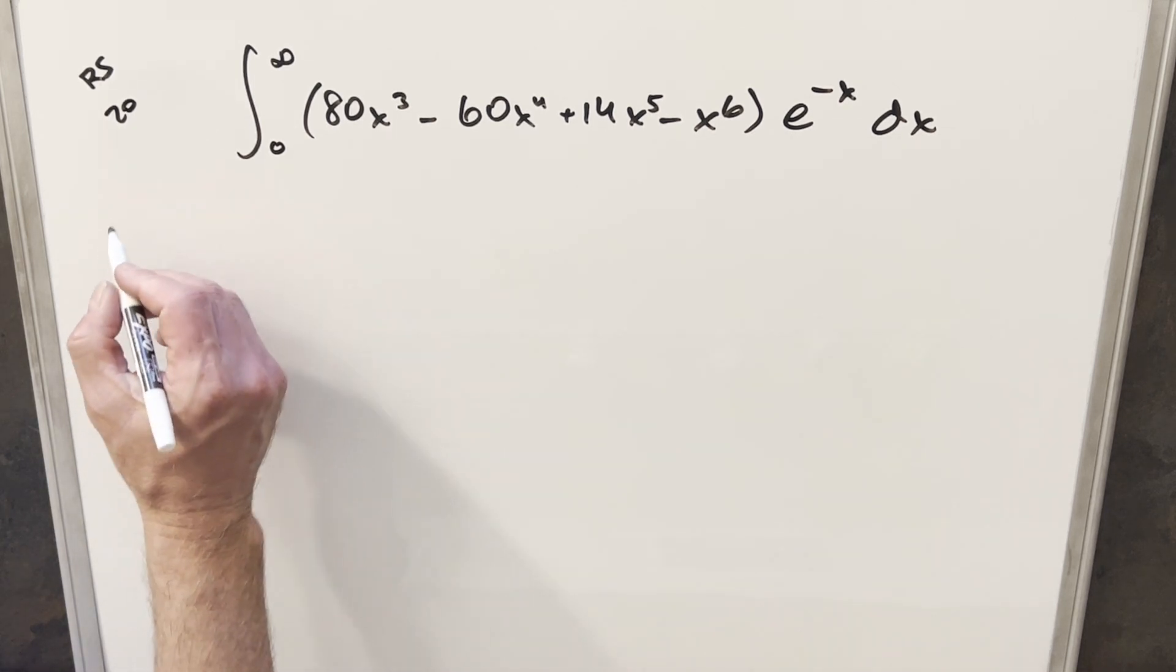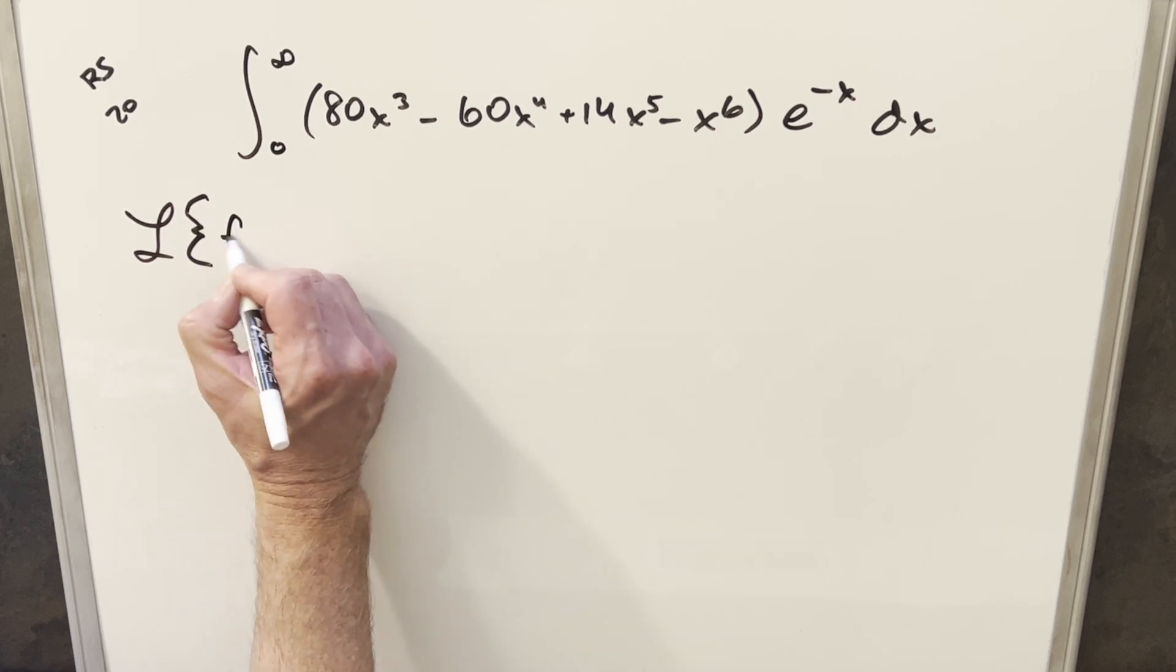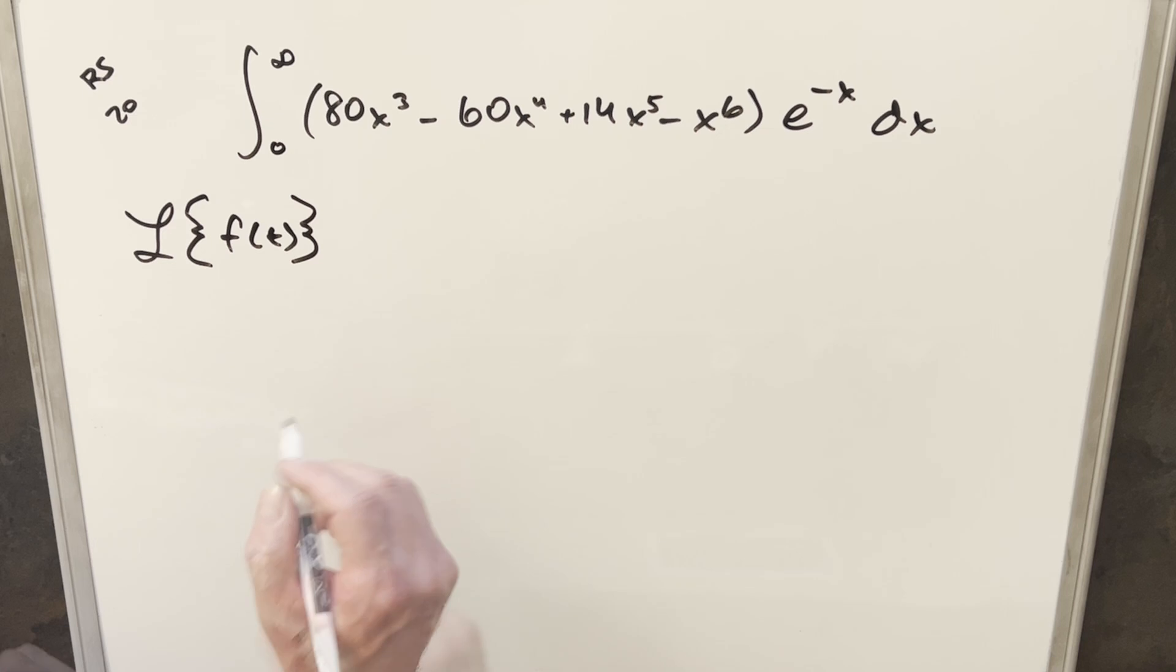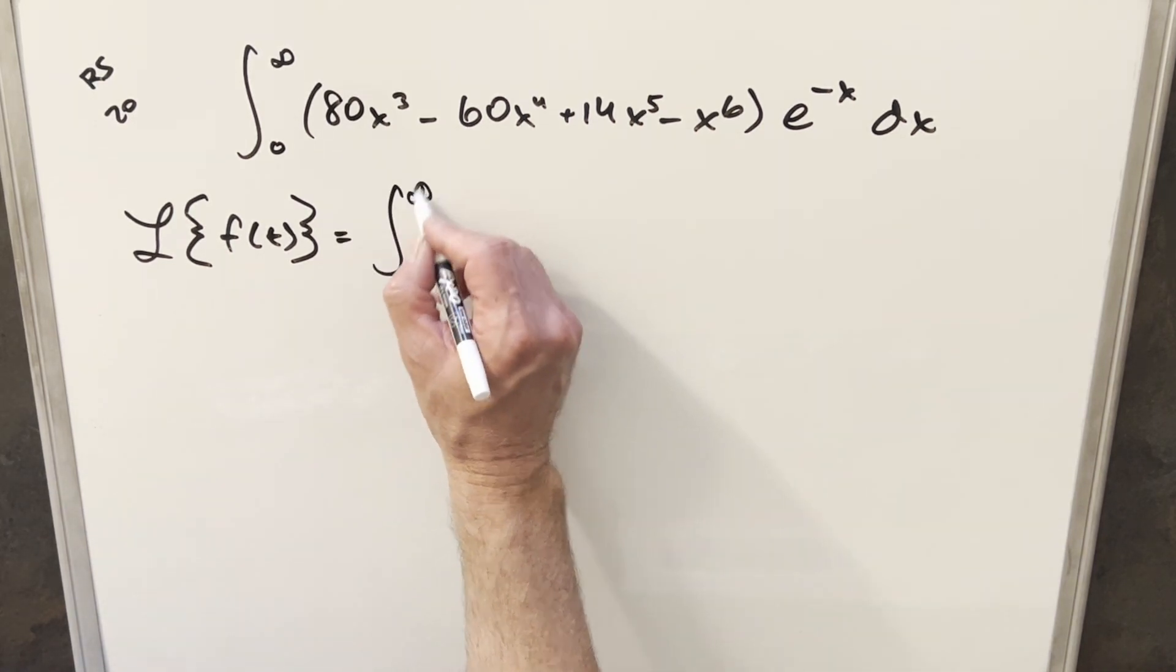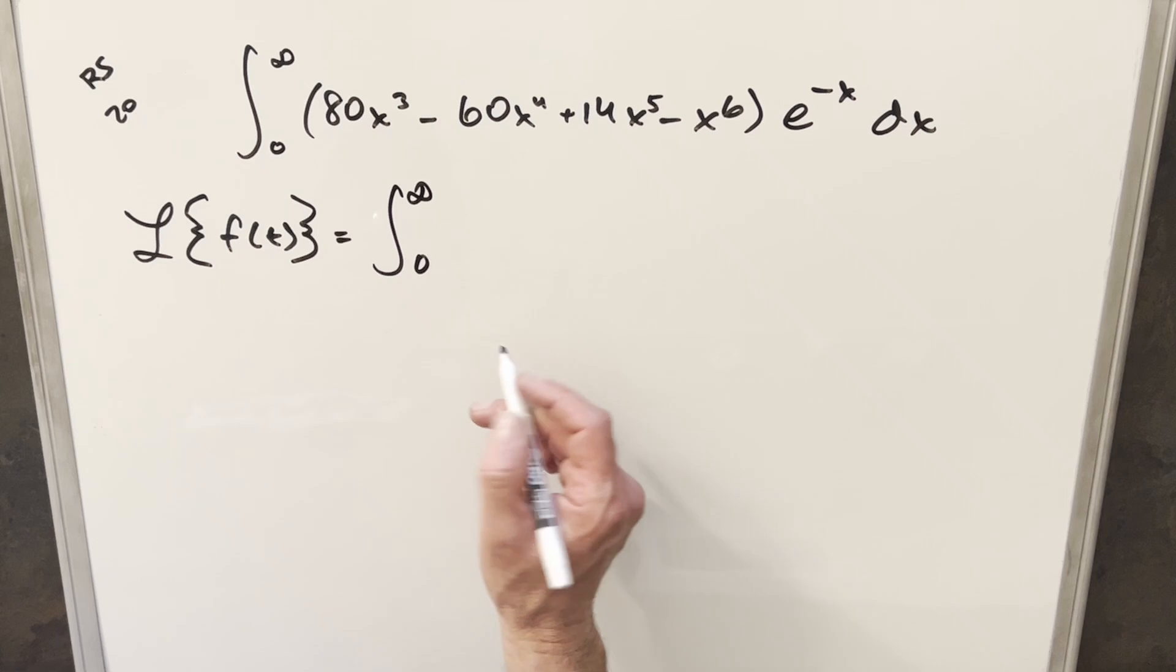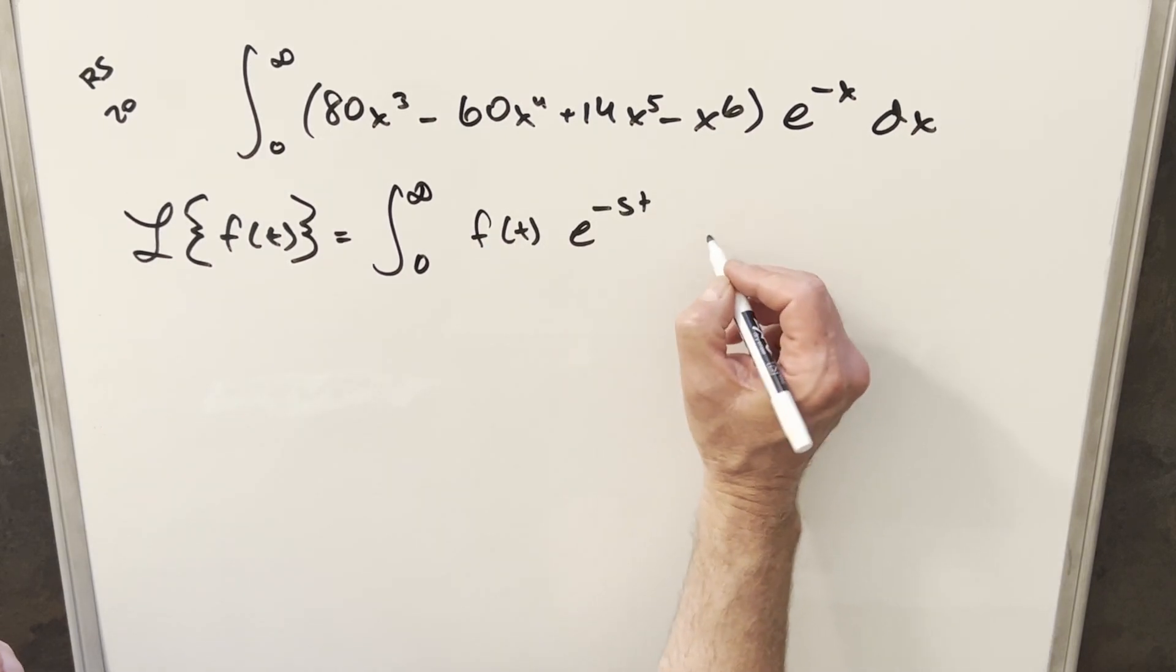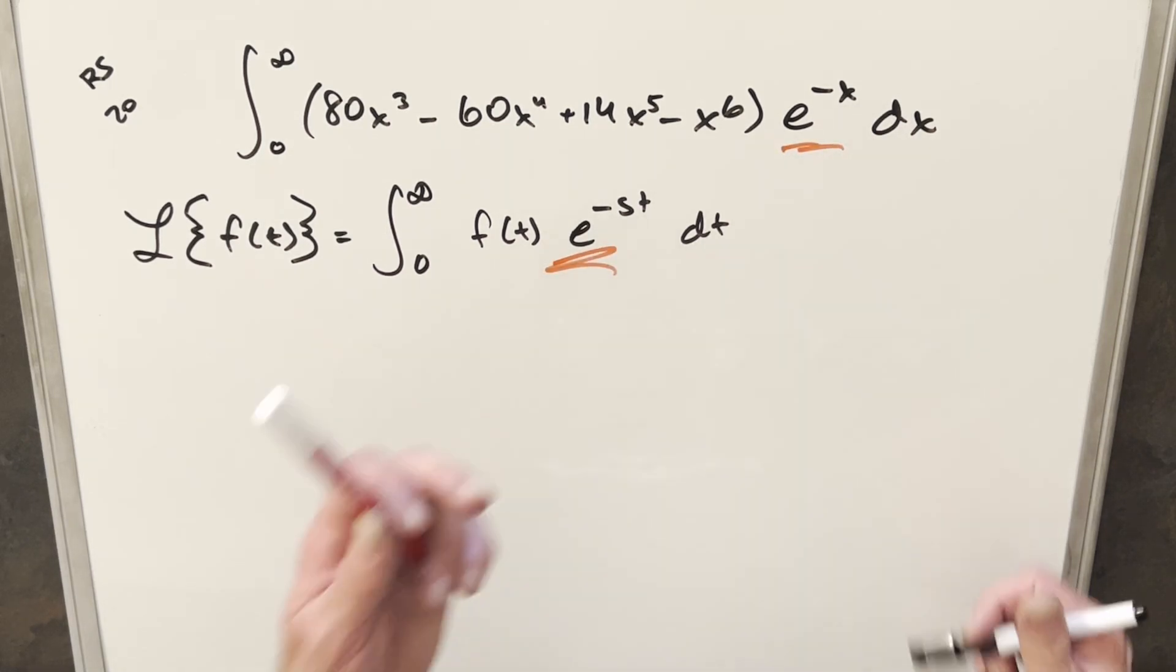So if you're not familiar with Laplace transform, let's just go over the definition really quick. We can write our Laplace transform of some function in terms of t. In our problem it's x, but it doesn't really matter. It's going to be an integral from 0 to infinity of f(t) e^(-st) dt.